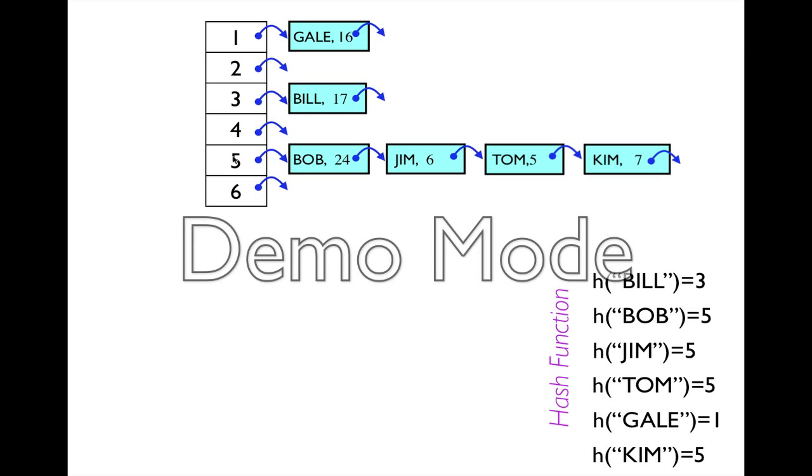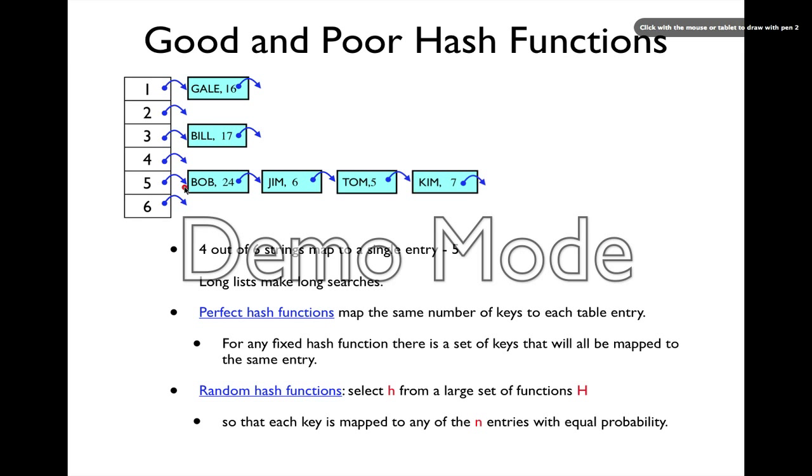This is not a very good hash table, and that's because too many elements are mapped to entry five. So here we have a list whose length l5 is equal to four. That's a long list and that would mean that we'll have to do long searches when we use this list.